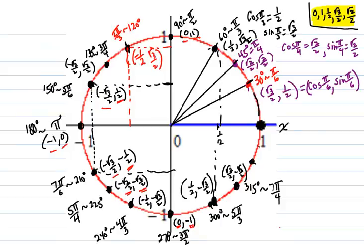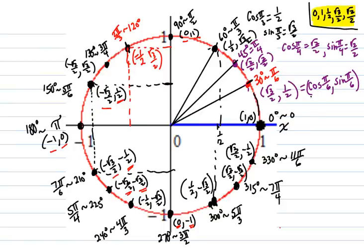We're almost home — 30 degrees shy of 360, so that is 330 degrees, coterminal to 11π/6, almost to 12π/6. The coordinates of that point are the long cosine — √3/2 — and the negative 1/2 sine. And lastly, at 0 degrees, coterminal to 0 radians, the point is 1, 0. So the cosine of 0 is 1, and the sine of 0 is 0.